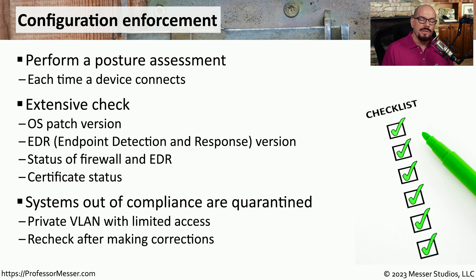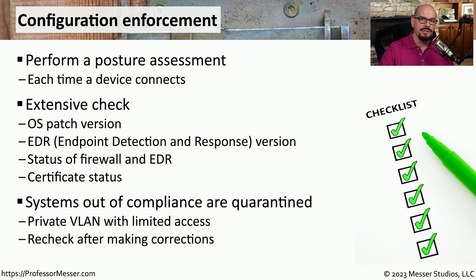If any of those settings are not up to date with the expected configuration, your system may be quarantined or set into a private VLAN where you can make changes to bring it up to date with the latest configurations. Once those changes are made, you can try logging in again, have the posture assessment complete, and if everything is working properly, you would now have access to the network.